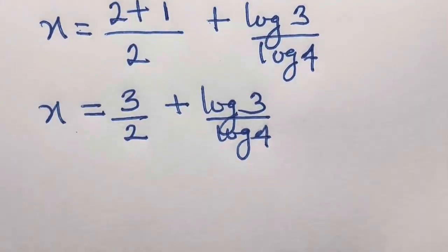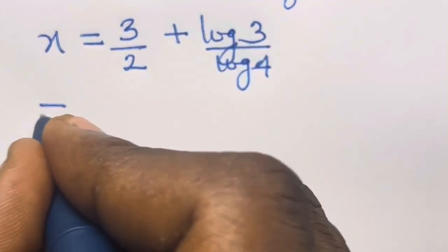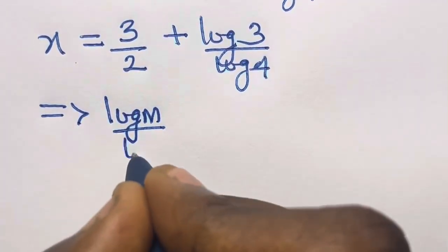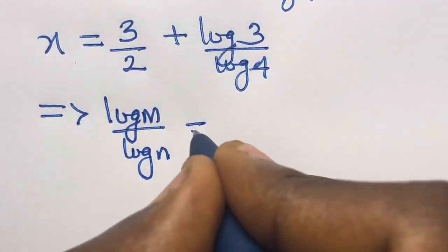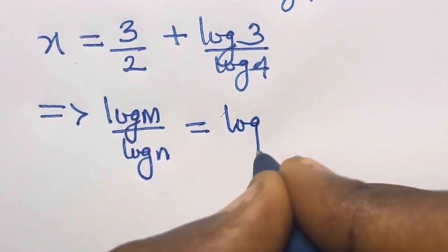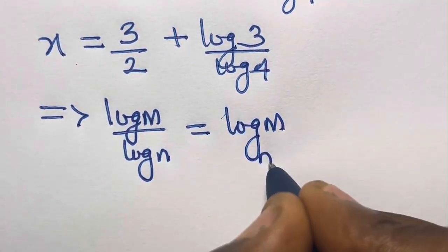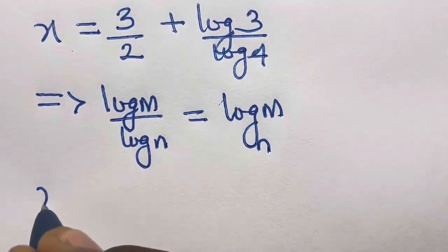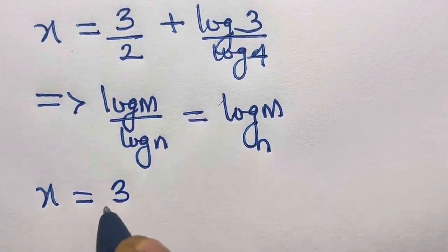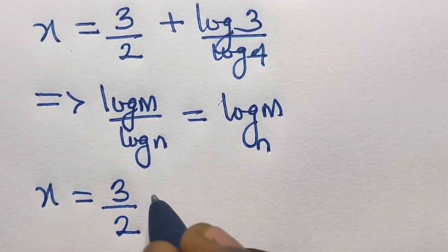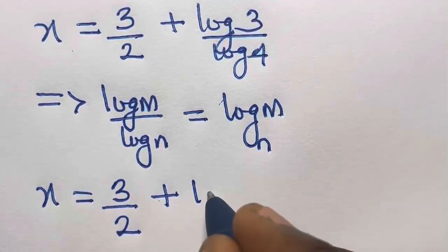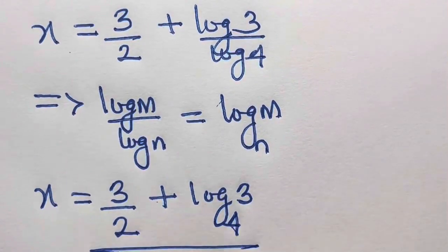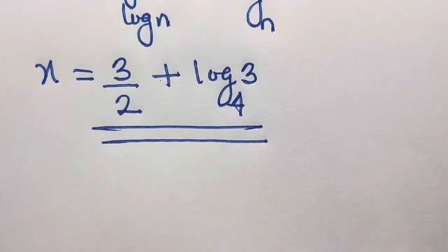From the change of base law of logarithms, recall that log m divided by log n equals log base n of m. Applying this, we have x equals 3 divided by 2 plus log base 4 of 3. So this is our answer.